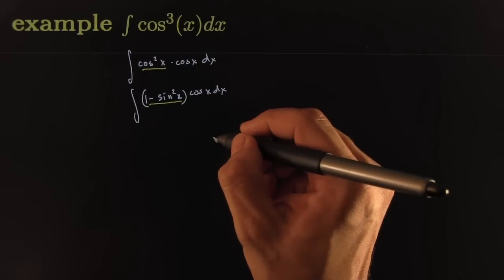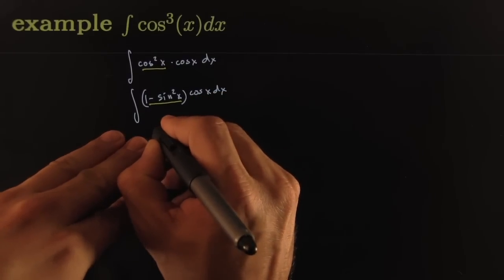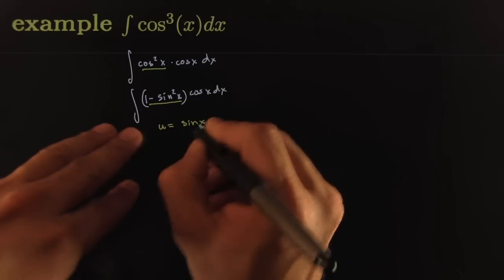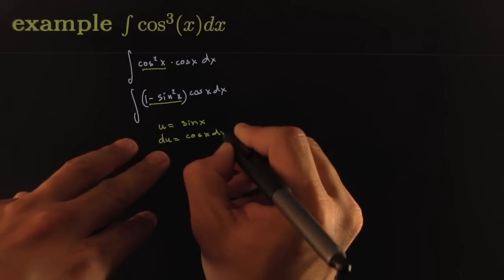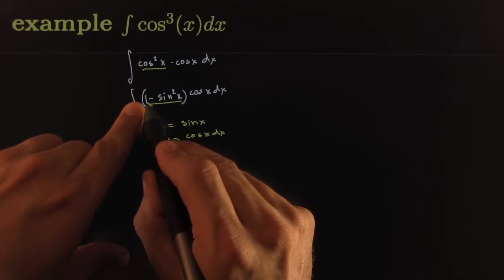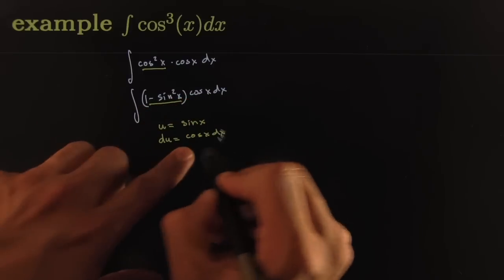And that allows me to play the following game. What if I made a u-substitution where my u was equal to sine of x? Then the differential of u would be equal to cosine of x dx. And if I think one move ahead, that would mean that this would be 1 - u² because this is sine, 1 - u², and over here I would have a plain old du. du can be exchanged for exactly that amount.